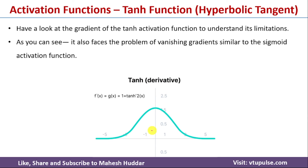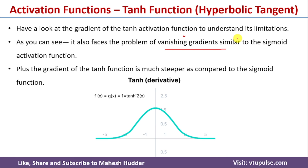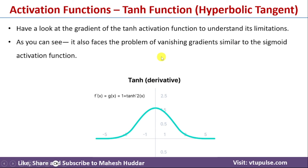The derivative of the tanh function is similar in shape to that of the sigmoid. It also suffers from the vanishing gradient problem because below −3 and above +3 the gradients flatten out. Because the gradients are very small in those regions, very little learning happens and the network faces the vanishing gradient problem.